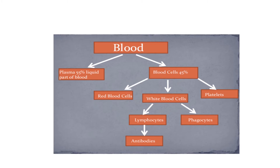Red blood cells make up 45 percent of the volume of our blood. The main function of the red blood cell is to carry oxygen from the lungs to every cell in our body. Red blood cells are composed mostly of a protein and iron compound called hemoglobin.